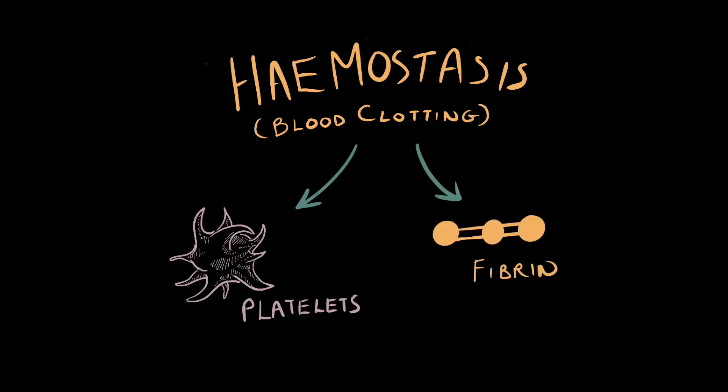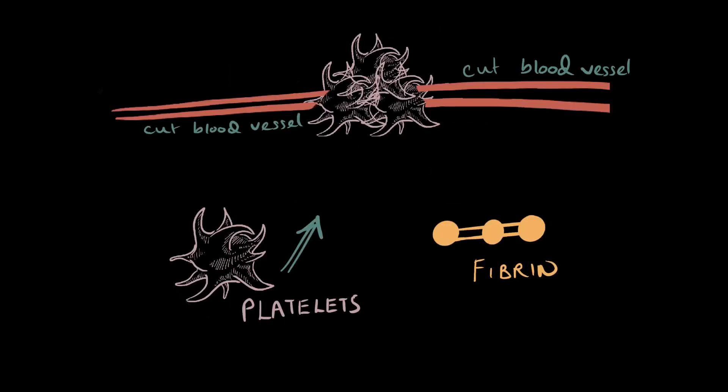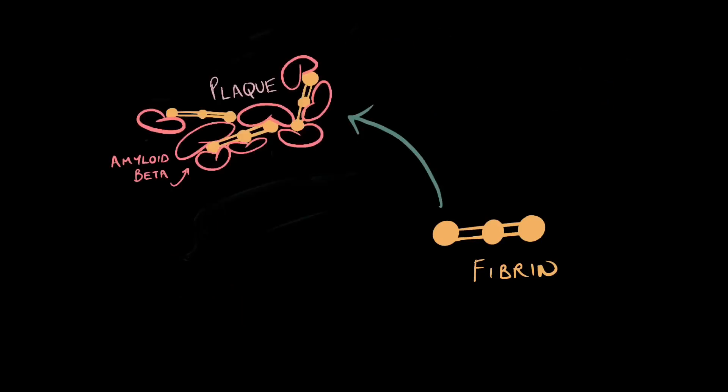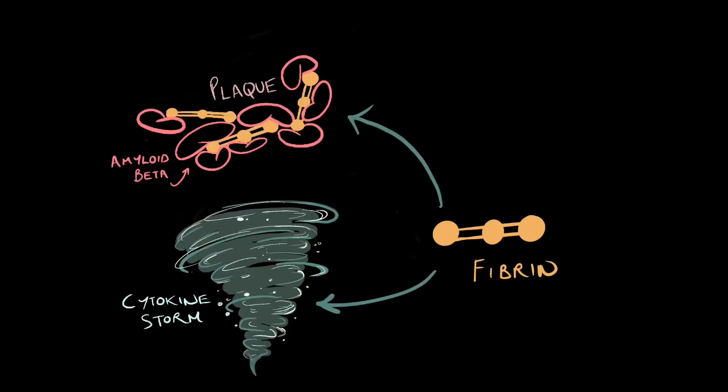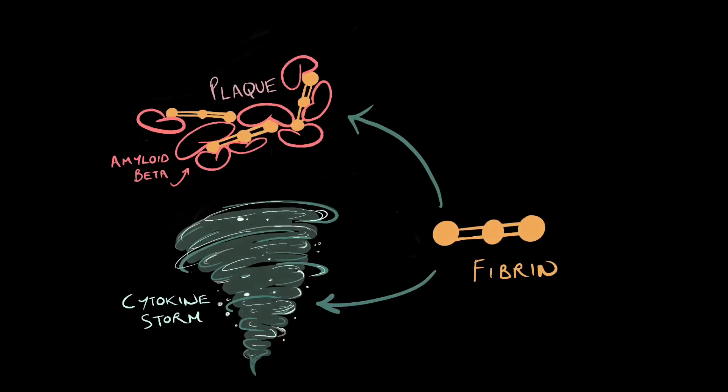To recap, platelets and fibrin work together to form blood clots, but fibrin is also involved in the amyloid beta plaques of Alzheimer's disease and the cytokine storm of coronavirus. Want to learn more about blood clotting? Check out my blog, link in the description.